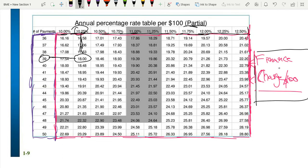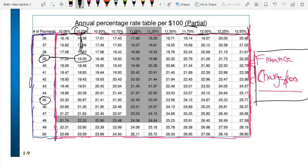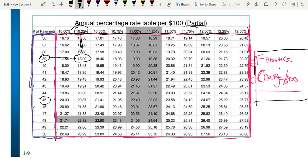Let's do one more example. Say we had 45 payments and a $24.12 finance charge per $100. We go over here, and that would be an 11.75% annual percentage rate. Now we've got one word problem to have more fun with this.